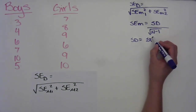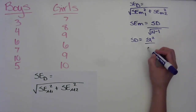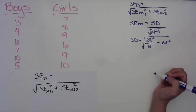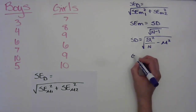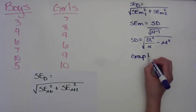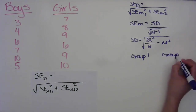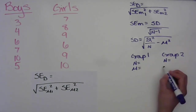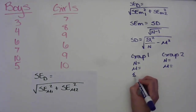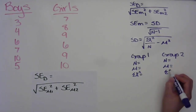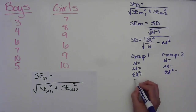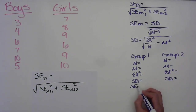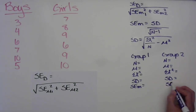The standard deviation formula is the square root of the sum of the raw scores squared over n, minus the mean squared. In order to work through this problem we'll organize it into group one and group two. For each group we're going to need: n, the mean, the x-squared value, the standard deviation, and the standard error of the mean.